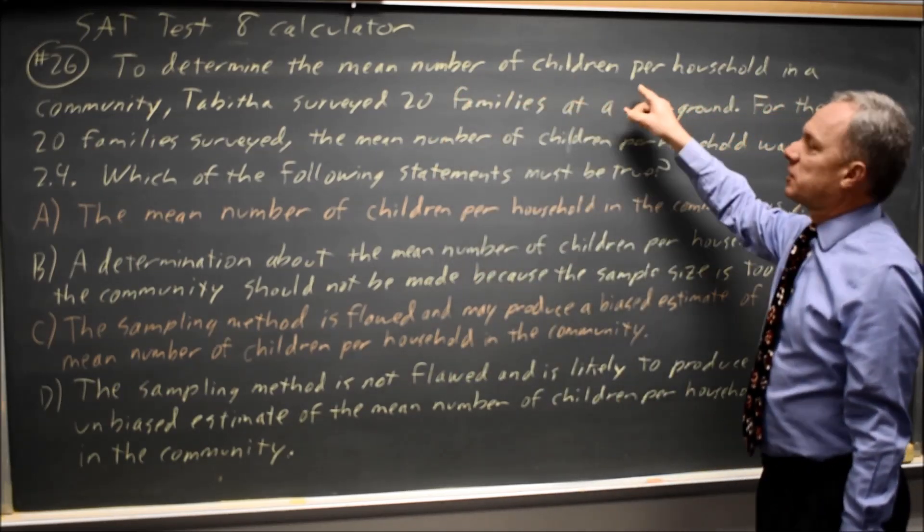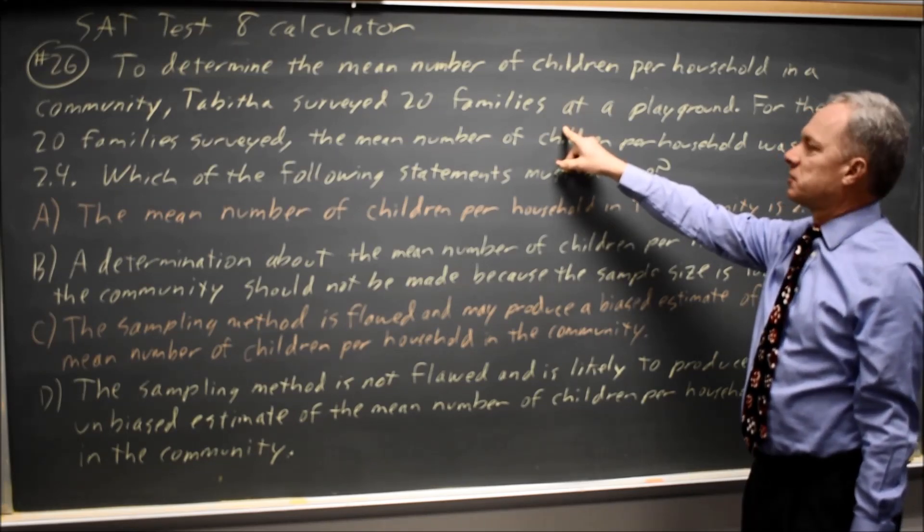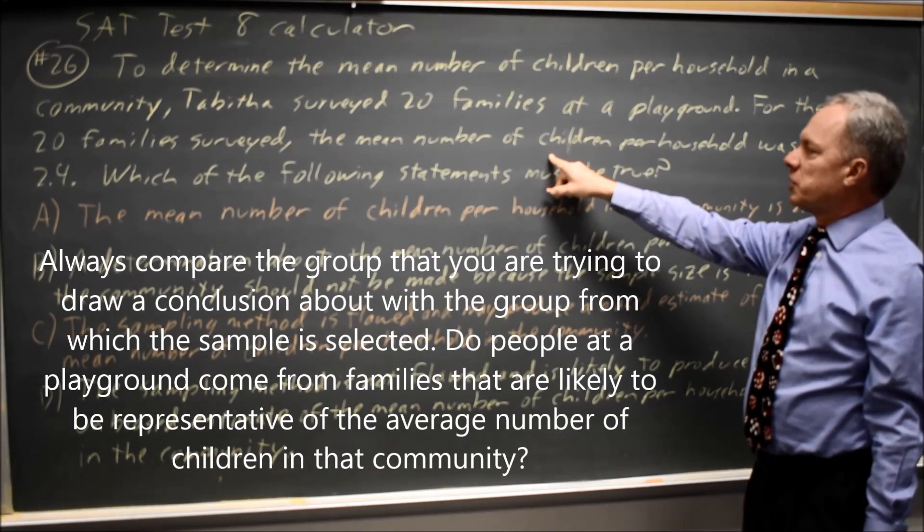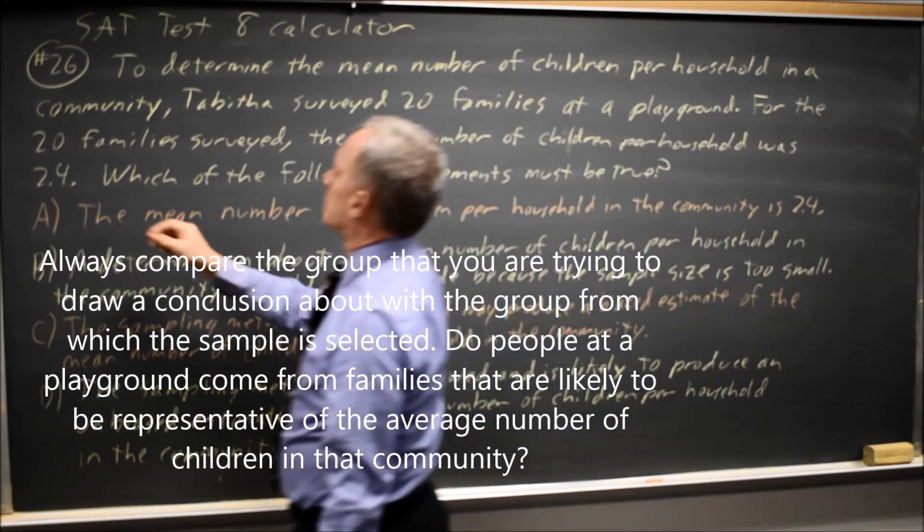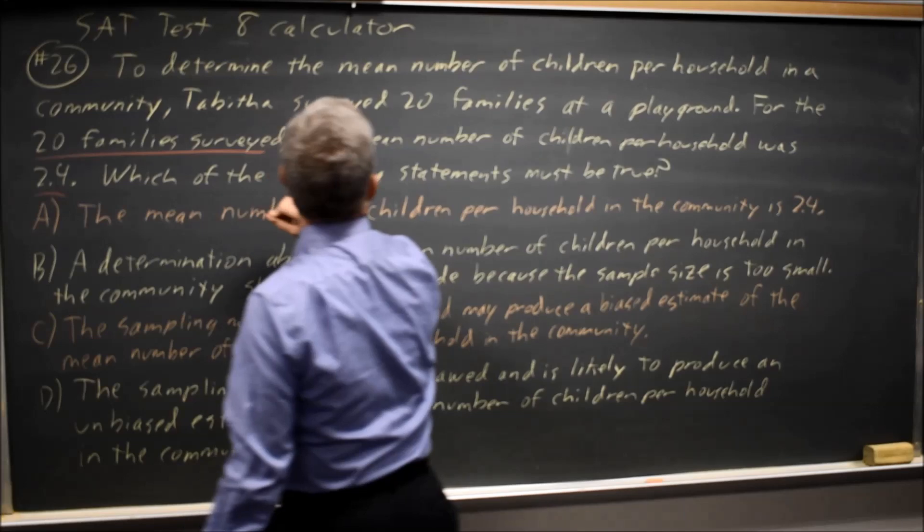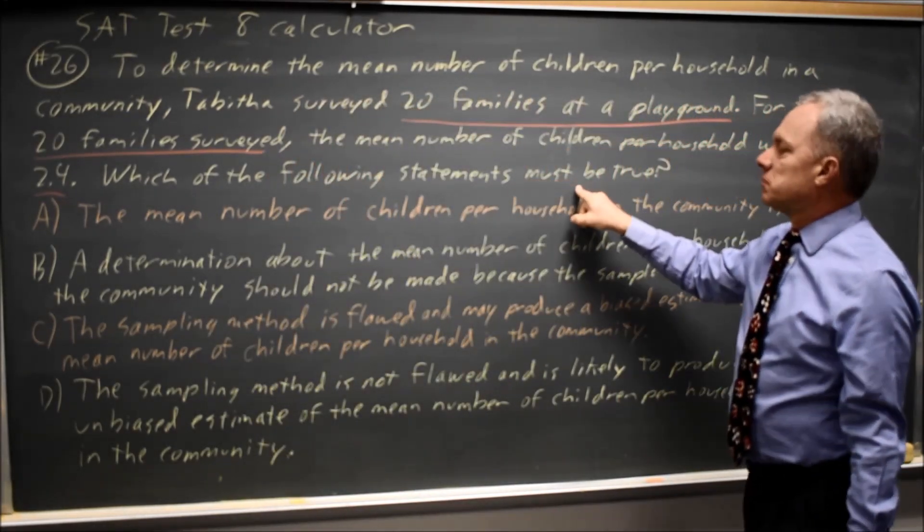To determine the mean number of children per household in the community, Tabitha surveyed 20 families at a playground. For the 20 families surveyed, the mean number of children per household was 2.4. Which of the following statements must be true?